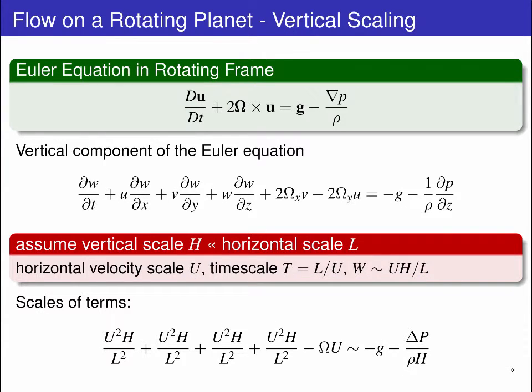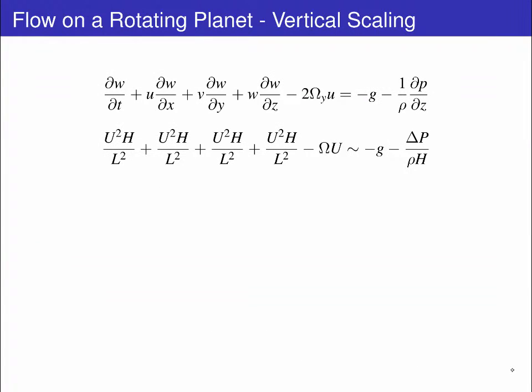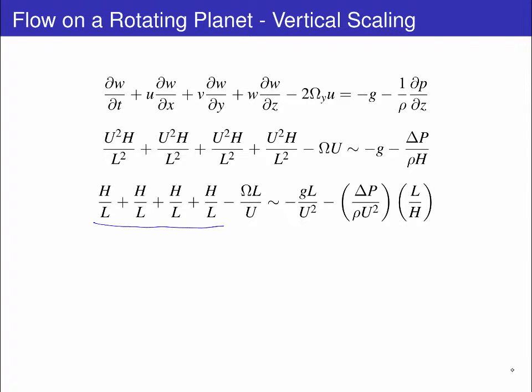We can substitute these scales into the equation to find the dominant balance of terms. The first thing to note is that you should recall from last video the x component of the omega vector, the east-west component of rotation, is zero. Bringing these dynamical and scaled equations together, we can non-dimensionalize by dividing the scaled equation through by U squared on L to give a group of H on L sized terms and an omega L on U term on the left-hand side, and then non-dimensional gravity and pressure terms on the right.